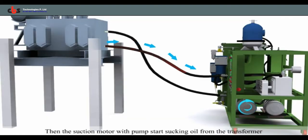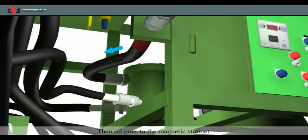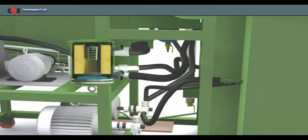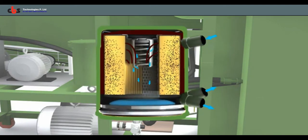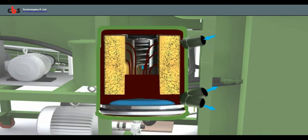Then the suction motor will start sucking dirty oil from the transformer inlet port. After that, dirty oil goes to the magnetic strainer where small metallic iron particles are removed that prevent damage to the suction pump.